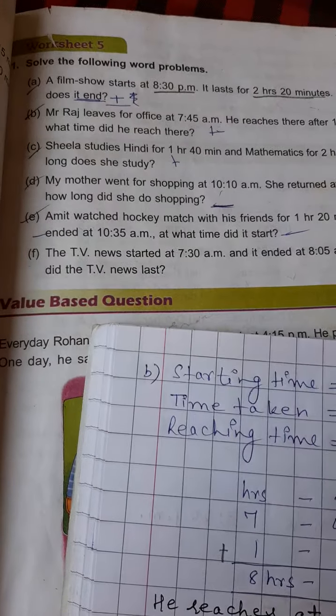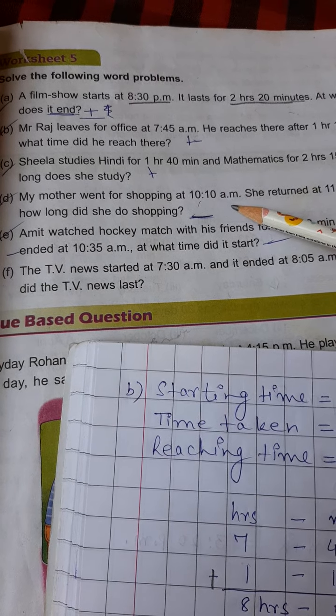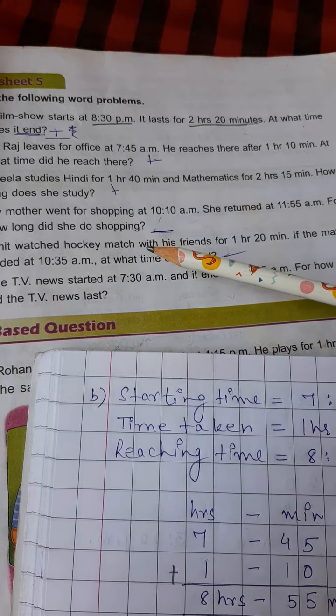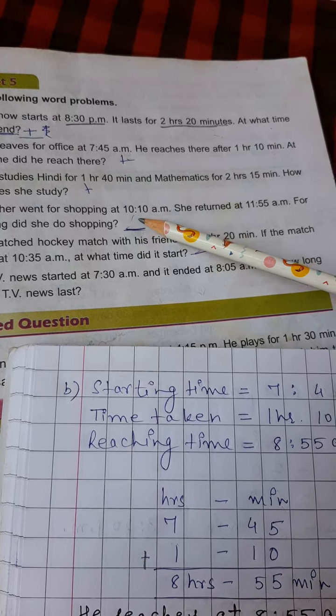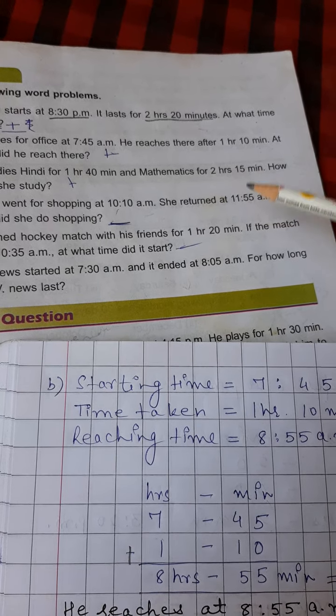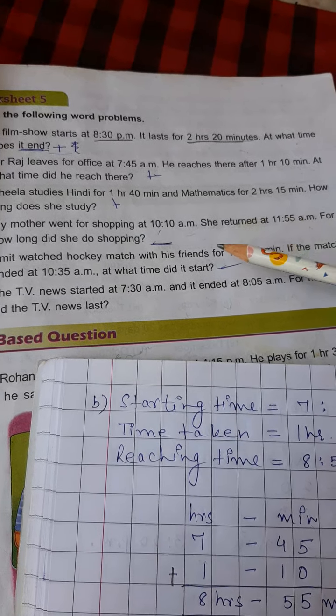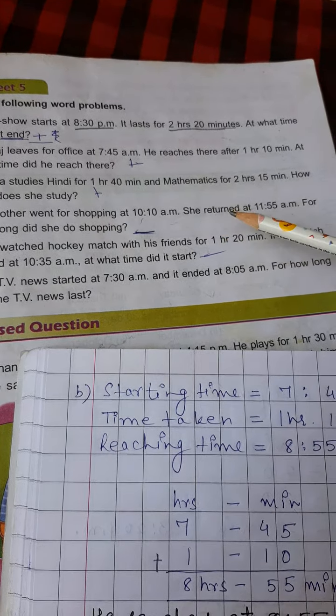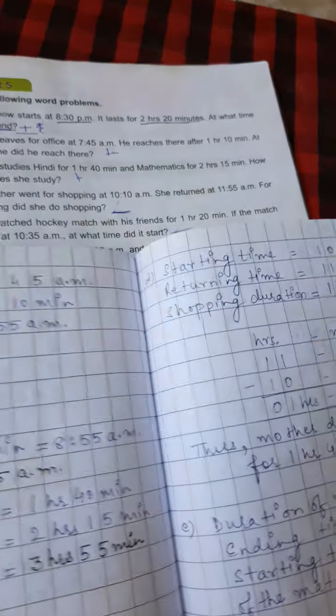Next question is, my mother went for shopping at 10.10am. She returned at 11.55am, for how long did she do shopping? Now students here, the mother is leaving at 10.10am in the morning. And she is returning after the time is given here, not the duration is given. So we have to find out how long, we have to find out the duration of her shopping. So in such type of the questions, we have to subtract.